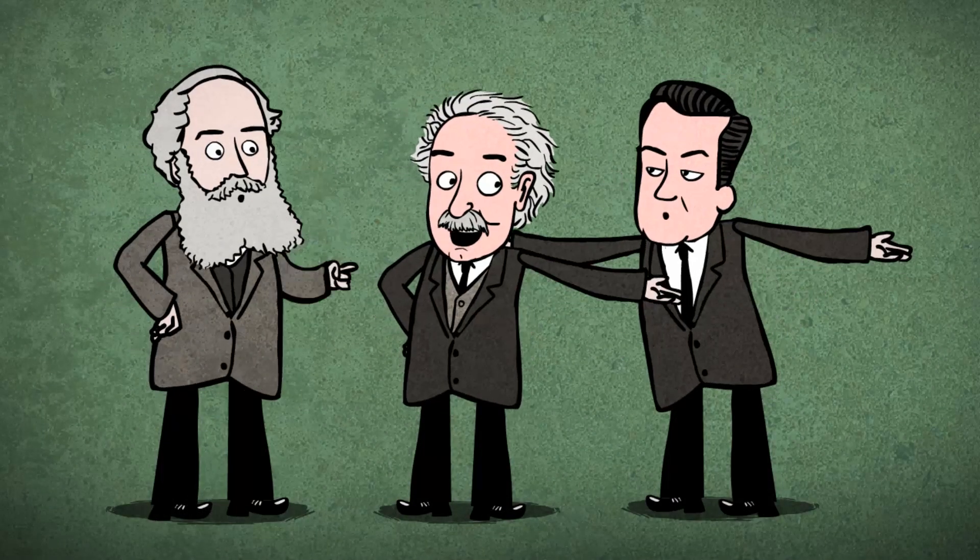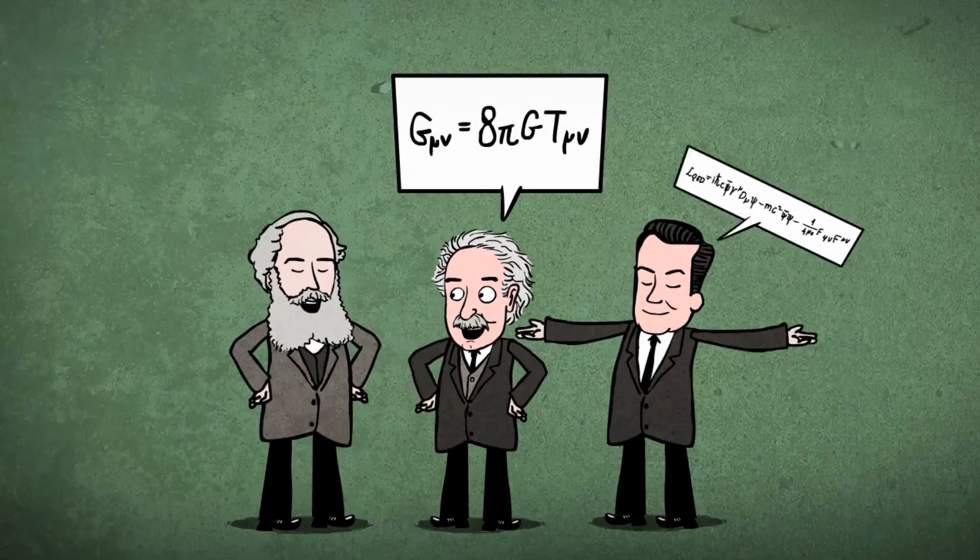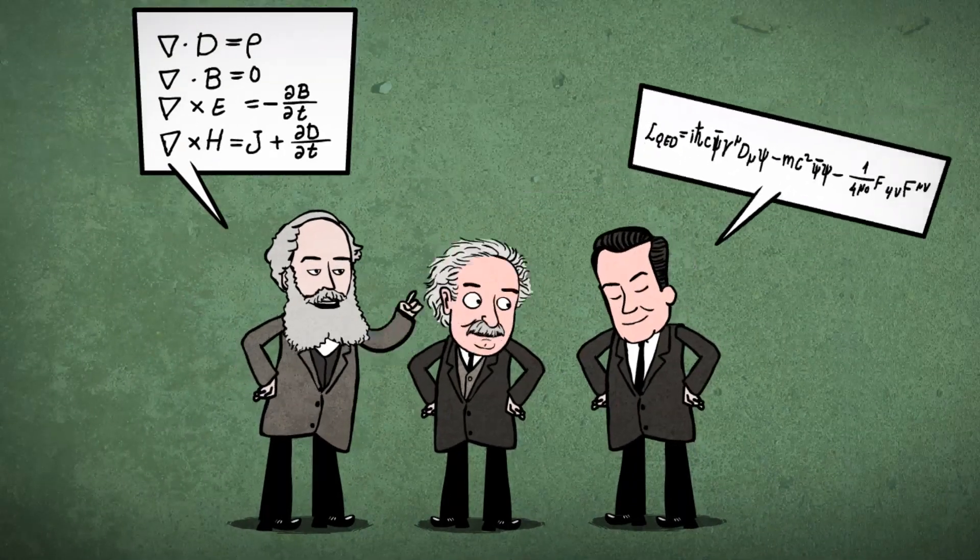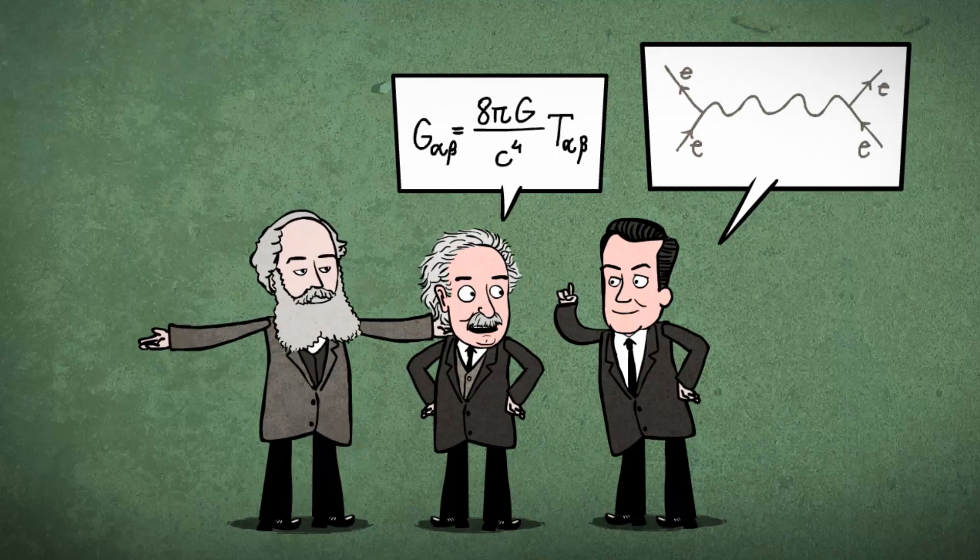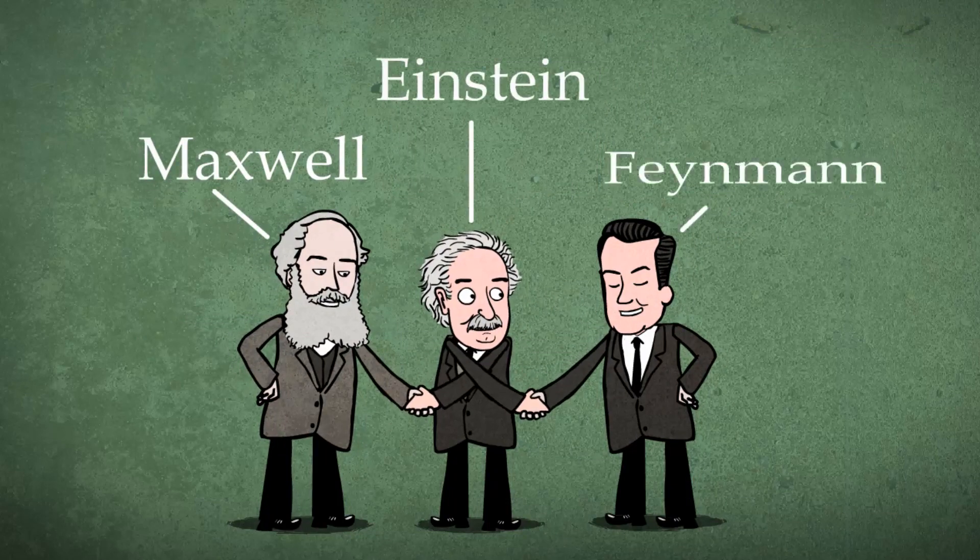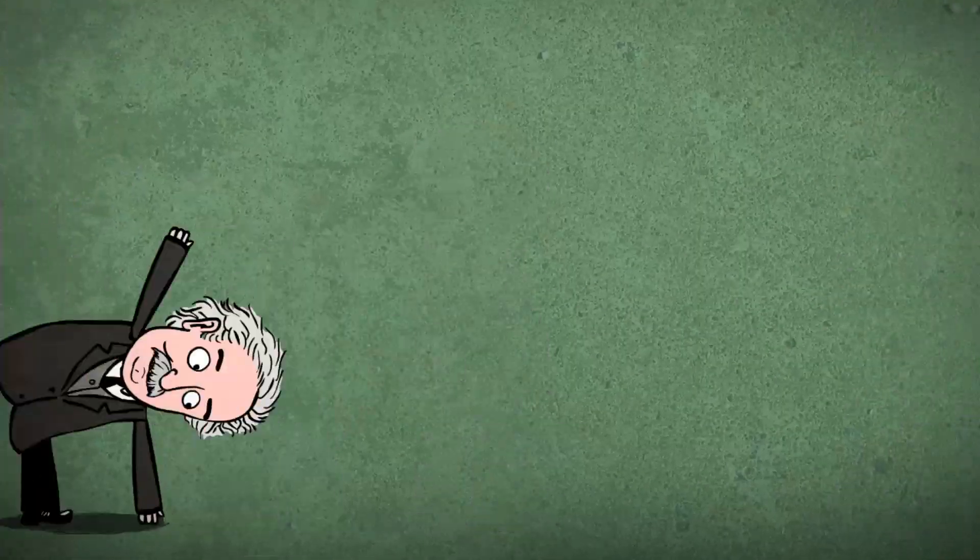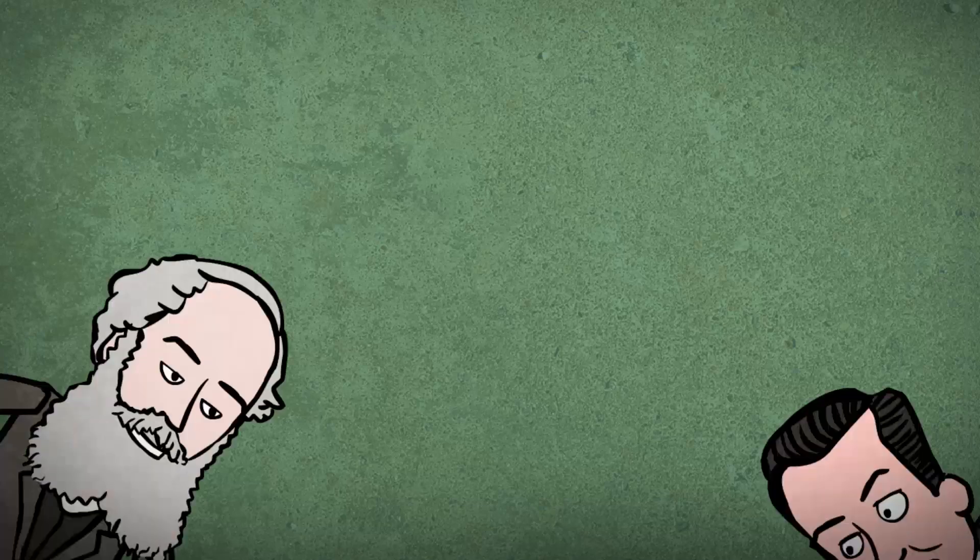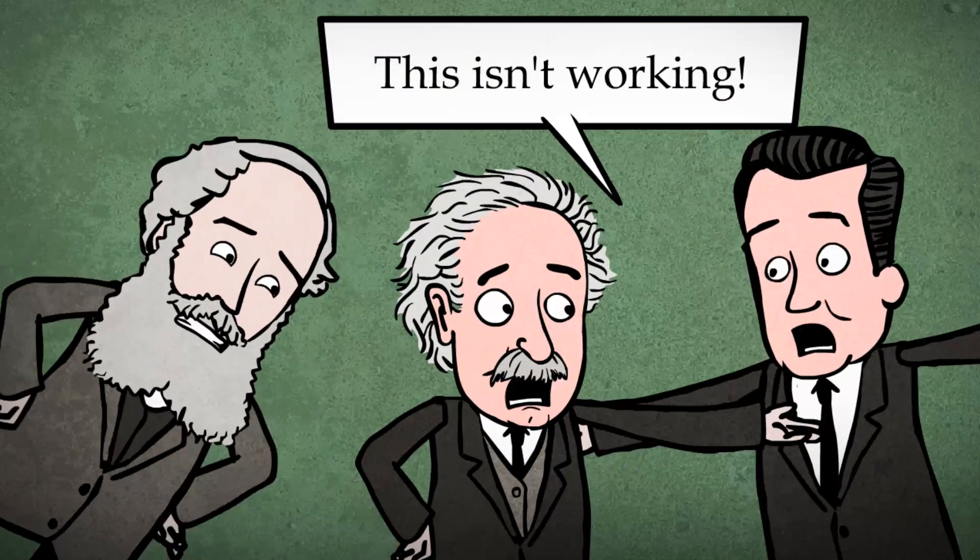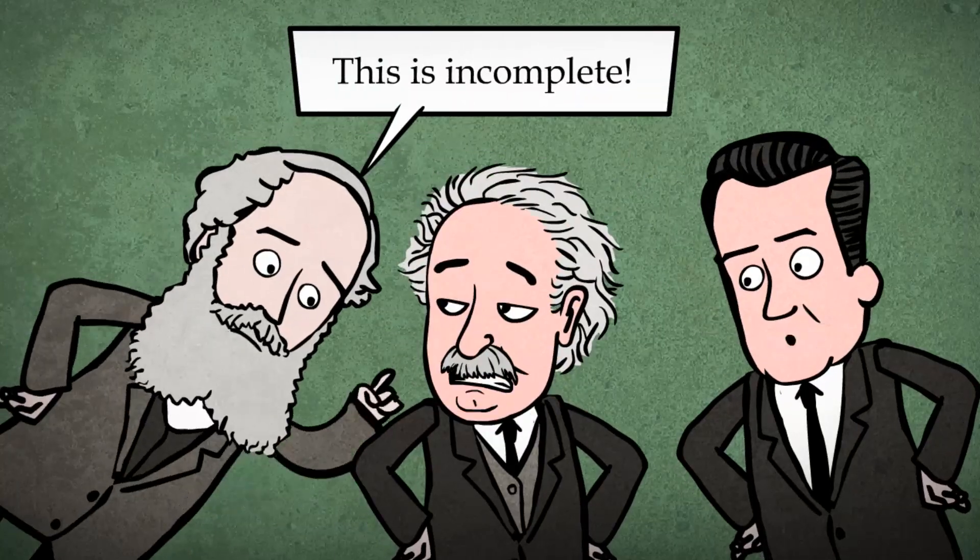Electrodynamics is usually described with great confidence, as if all these questions were solved years ago by the great minds of physicists like Maxwell, Einstein, and Feynman. But even those giants of physics pointed out flaws in the existing model, flaws that have yet to be solved.